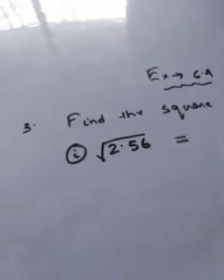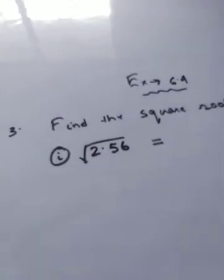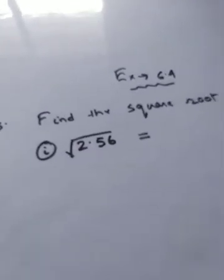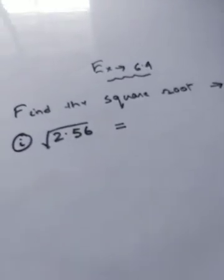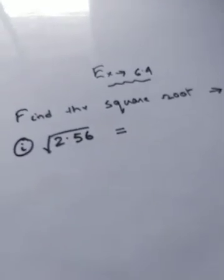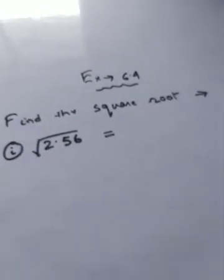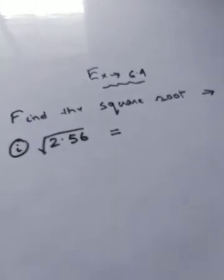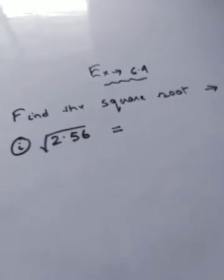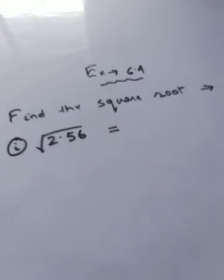Today in this session I will explain question number three of Exercise 6.4. It is also very easy. Find the square root of 2.56. The numbers are in decimal form.